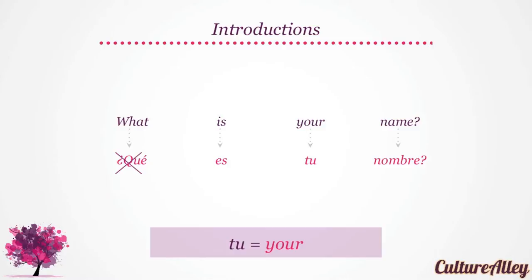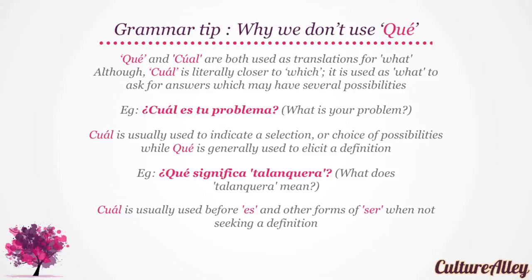However, we don't use 'que' in this sentence. Let's understand why. 'Que' and 'cual' are both used as translations for 'what', although 'cual' is literally closer to 'which'. It is used as 'what' to ask for answers which may have several possibilities. 'Cual' is usually used to indicate a selection or choice of possibilities, while 'que' is generally used to elicit a definition.